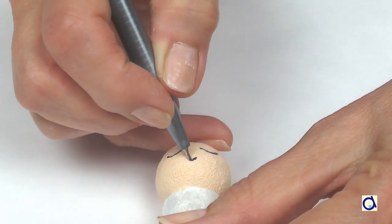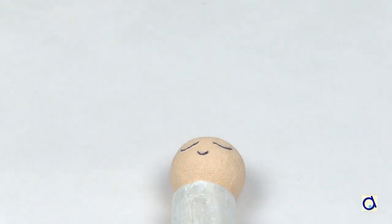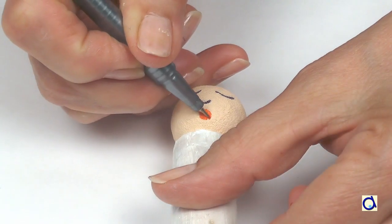Take a black indelible marker and trace the eyes and nose of the angel. Take a red indelible marker and draw the mouth.